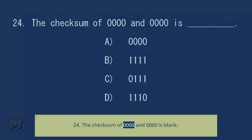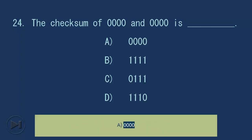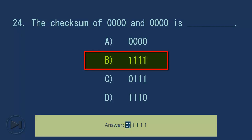Question 24: The checksum of 00000 and 0000 is blank. A) 000000, B) 11111, C) 0111, D) 11110. Answer: B, 11111.